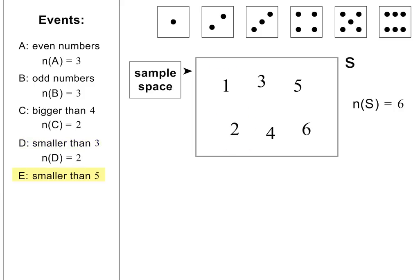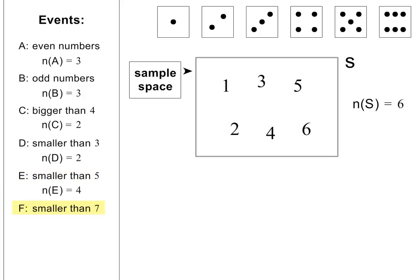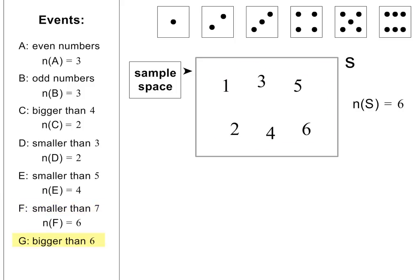Event E is defined to be numbers smaller than 5. There are four outcomes in this event, so N(E) is equal to 4. Event F is defined to be numbers smaller than 7. There are six outcomes in this event, so N(F) is equal to 6. Event G is defined to be numbers bigger than 6. And because there are no numbers bigger than 6 on a die, N(G) is equal to 0.